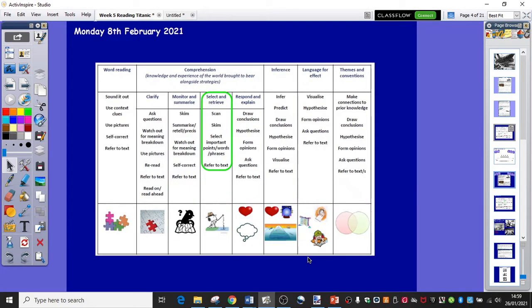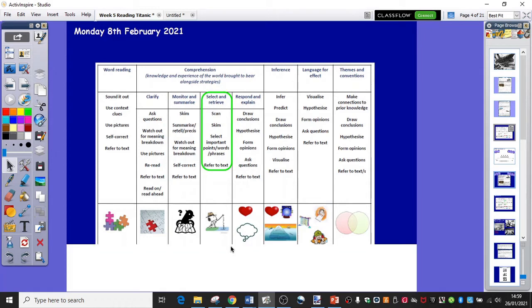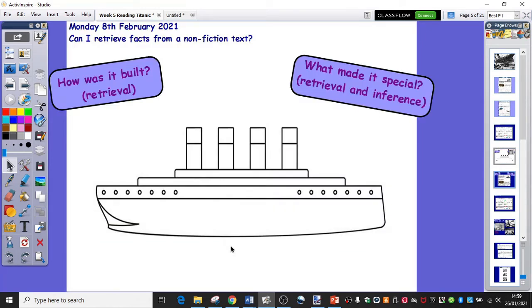Okay, so for today, Monday the 8th of February, we are going to be just straightforward today looking at some retrieval work. So we're going to be scanning and skimming the text, and we're most importantly going to be looking out for the important words and phrases that are black and white there in the text. So this is the page that you've been sent, this is your task for today. It's quite an important one, so you really get to know lots of information about the Titanic before we start getting into the horror that ensued with the Titanic hitting an iceberg.